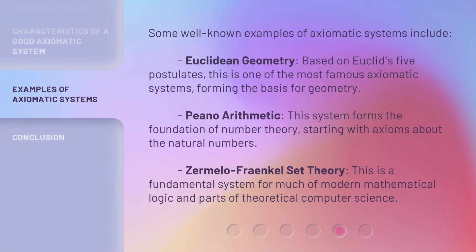Some well-known examples of axiomatic systems include Euclidean geometry, based on Euclid's five postulates — one of the most famous axiomatic systems, forming the basis for geometry. Peano arithmetic, which forms the foundation of number theory, starting with axioms about the natural numbers. And Zermelo-Fraenkel set theory, a fundamental system for much of modern mathematical logic and parts of theoretical computer science.